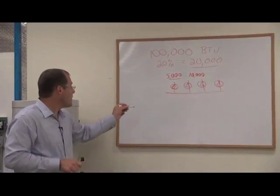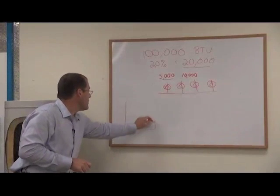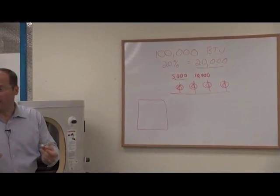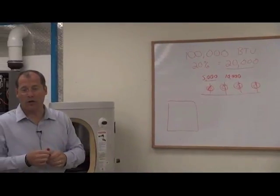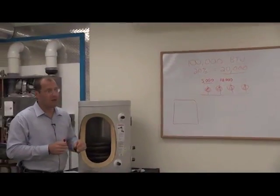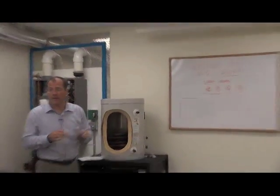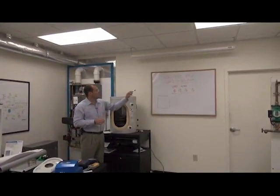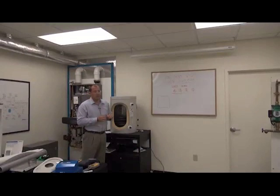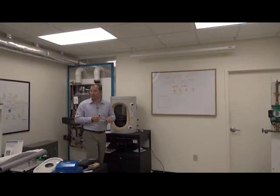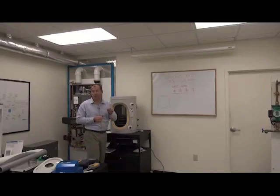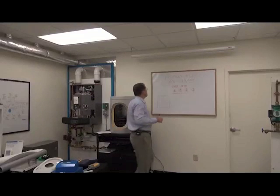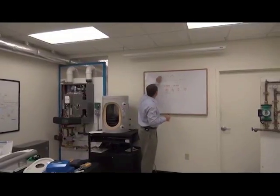The larger mass boilers that had all this water volume could satisfy that for quite a while before having to turn on. So your installing contractor has to be conscious of the size of the zones in order to try to minimize short cycling. There's some piping practices and things that we can do if there's lots of small zones to prevent short cycling. But the most important thing he can do is size this right.